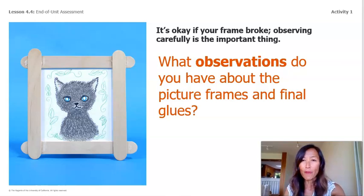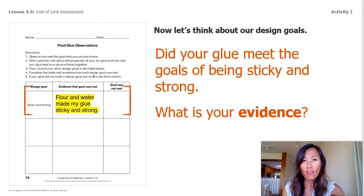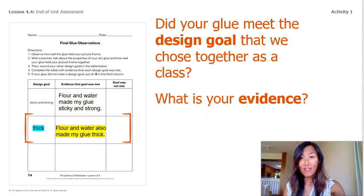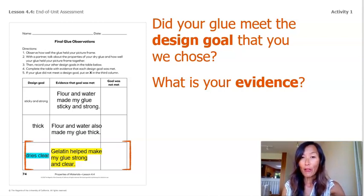Now, what observations do you have about the picture frames and final glues? Let's go back to this page and think about our design goals. The title of this page is Final Glue Observations. Did your glue meet the goals of being sticky and strong? What is your evidence? Our first design goal: sticky and strong. The evidence that goal was met was that flour and water made my glue sticky and strong. Did your glue meet the design goal we chose as a class, which was thick? The evidence was that flour and water also made my glue thick. Lastly, did your glue meet the design goal of dry and clear? We found out that gelatin helped make my glue strong and clear.